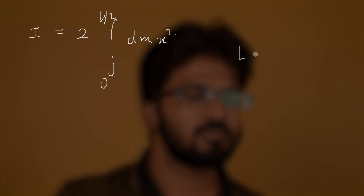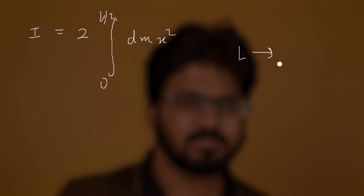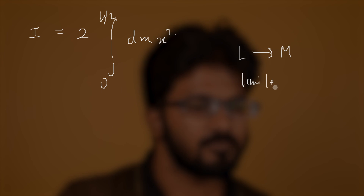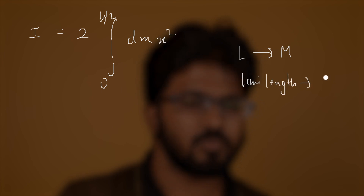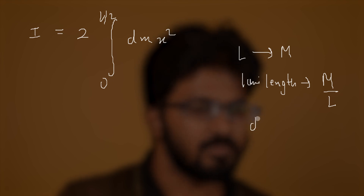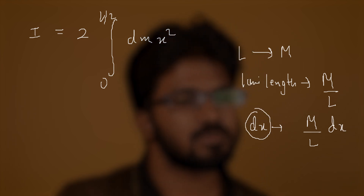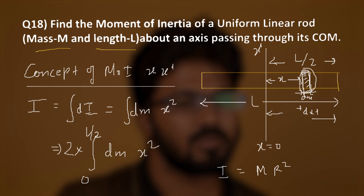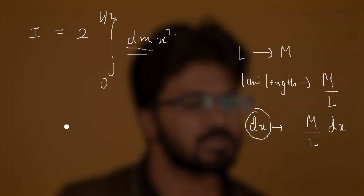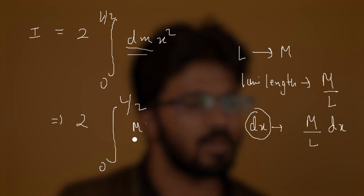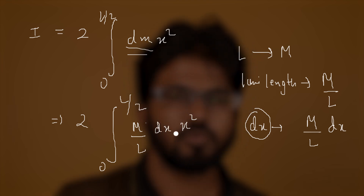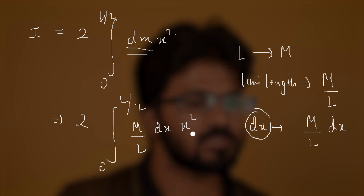For the full length l of the rod, the total mass is m. For a unit length, the mass is m/l, so for a small element dx the mass dm = (m/l) dx. Substituting, we get I = 2 × ∫₀^(l/2) (m/l) x² dx. This expression (m/l) x² dx represents the moment of inertia contribution from each small element dx.